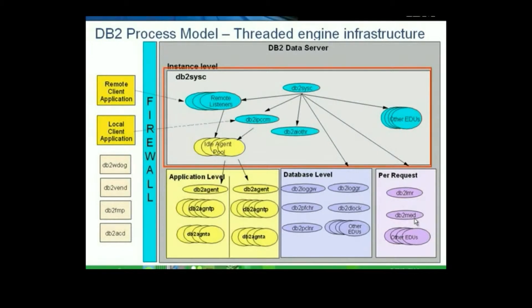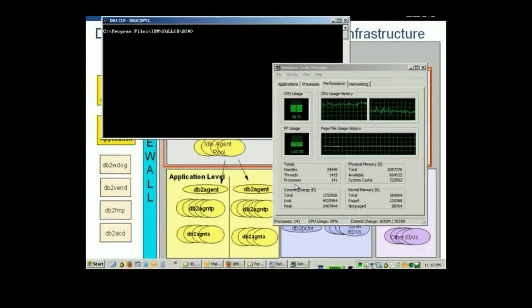On Windows, the process name is DB2CCS. Know that if you kill DB2CC, you will bring down DB2 forcibly. This is not recommended, as it may corrupt some data, but in some situations it may be the last resource.